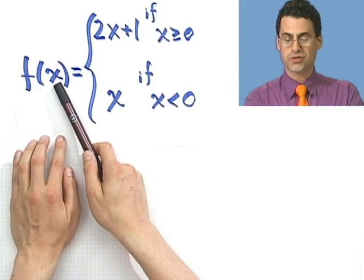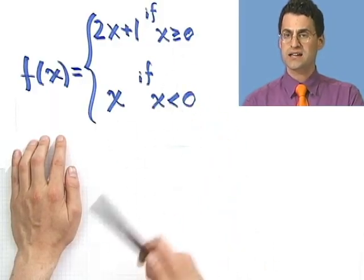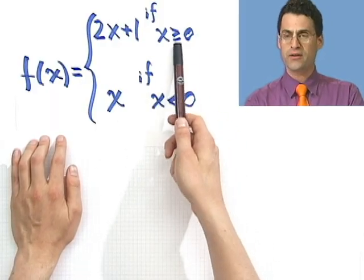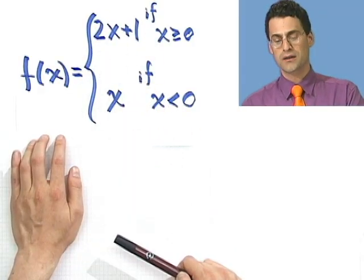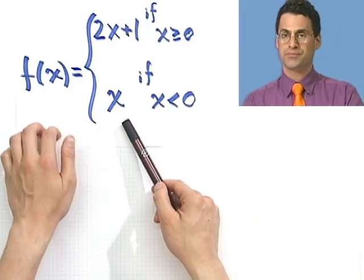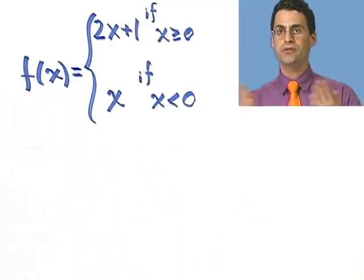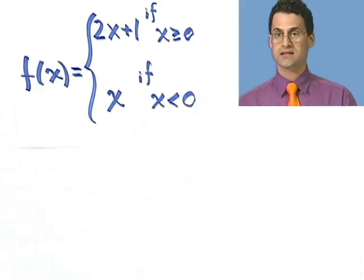This says f of x is a function and it equals one of two things depending upon what x is. If x is bigger than or equal to zero, then it equals 2x plus 1. But if x were to be negative, less than zero, then it just equals x. So this is a function that's actually made up of two functions that have been spliced together right along the line x equals zero.